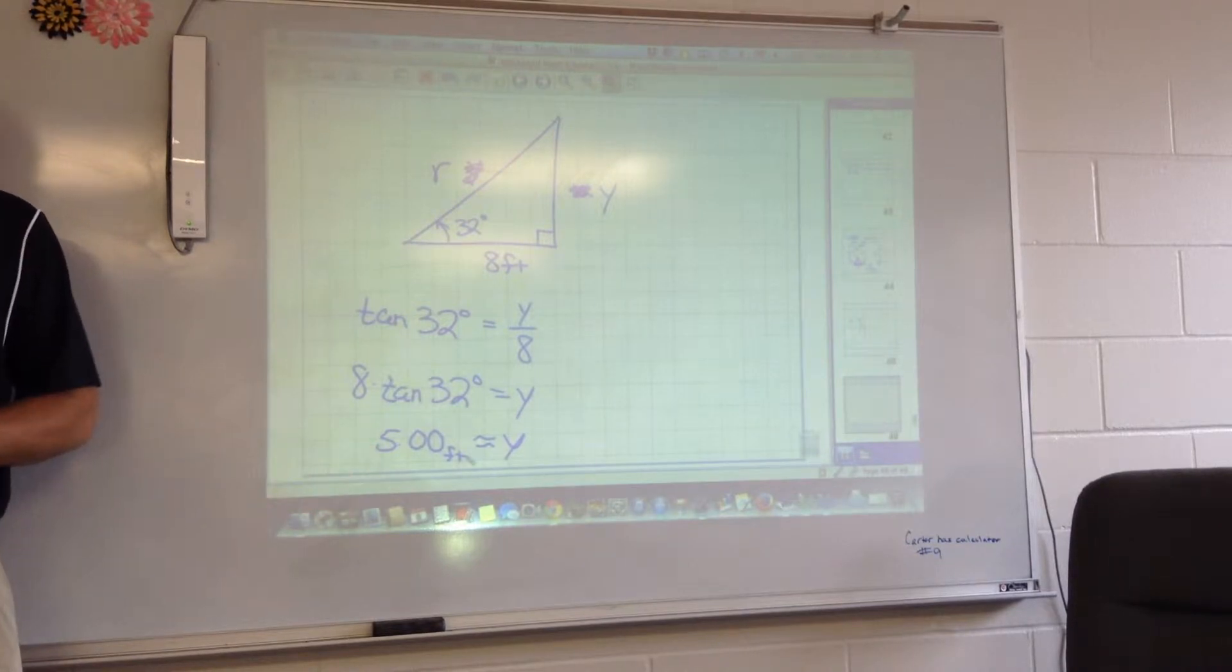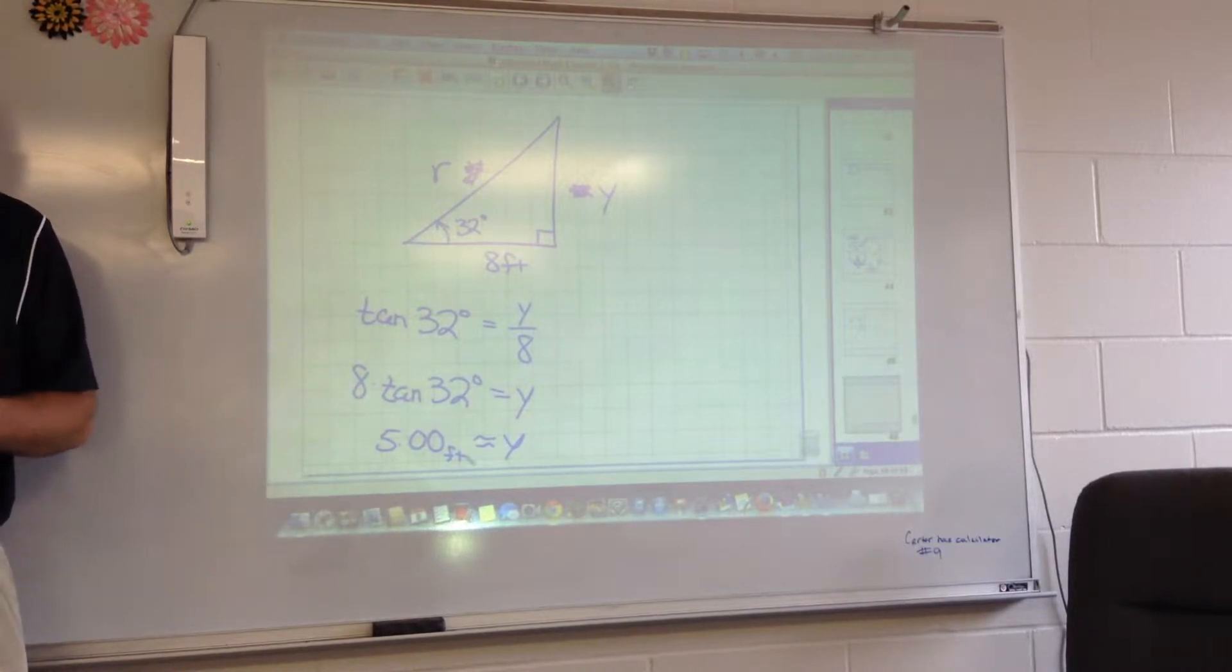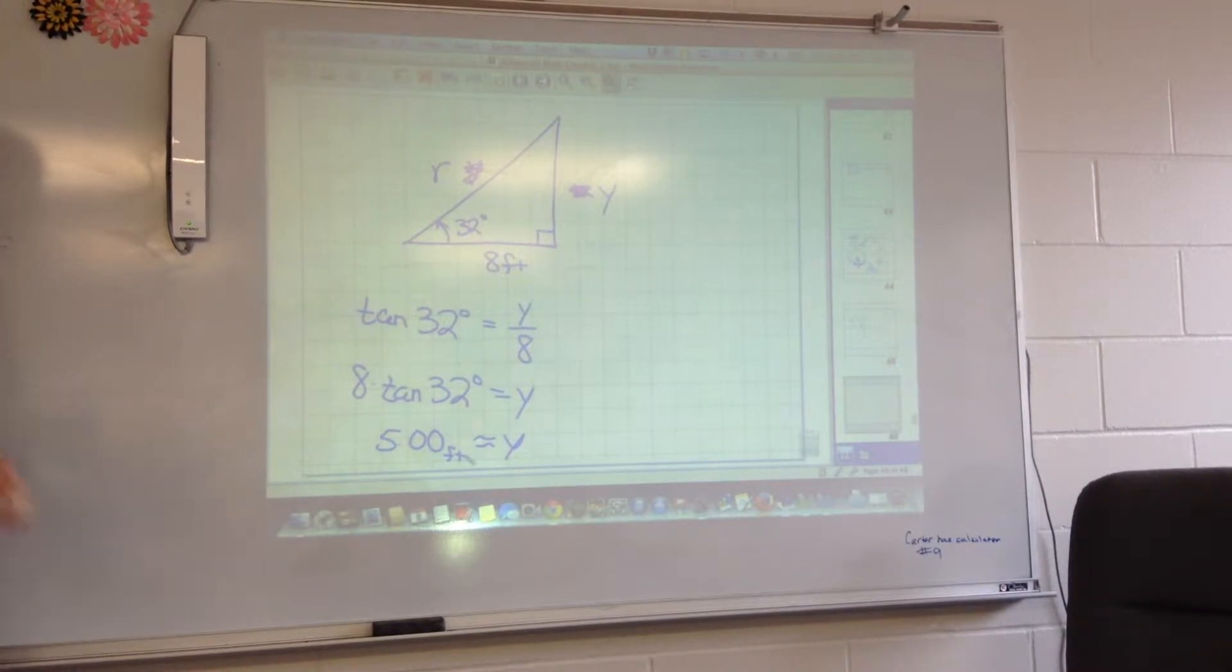I like writing 5.00 to kind of identify that I've rounded it to the 100th place. Notice I've also put squiggly lines there. I'm not going to count you wrong if you don't, but why am I doing that? Because it's about equal to that. It's not exactly. The only way you can really write your exact answer is Y equals 8 times the tangent of 32 degrees.